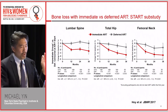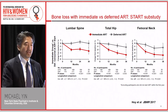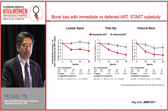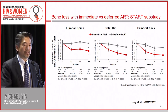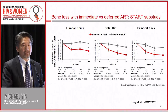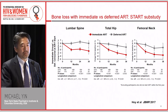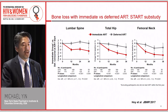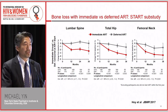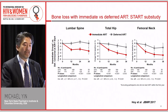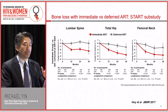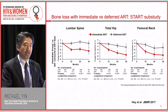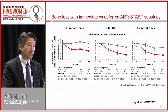The greatest single pictorial representation of the independent effects of HIV and ART initiation comes from the START sub-study, in which patients were randomized to immediate versus deferred antiretroviral initiation. The gray line shows the deferred group, with a net bone loss of about 1% during that period before ART — still significant given the age of these individuals — but much greater loss in the red line after initiation of antiretroviral therapy.